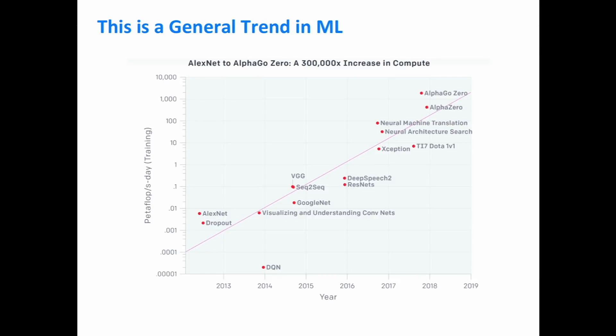The increasing scaling of deep learning is a general trend across all of machine learning, not just NLP. This plot shows time on the x-axis and log-scaled petaflops used to train models on the y-axis — showing exponential growth in compute power being thrown at machine learning models. It's unclear whether exponential growth will continue, but there is certainly rapid growth in model size.